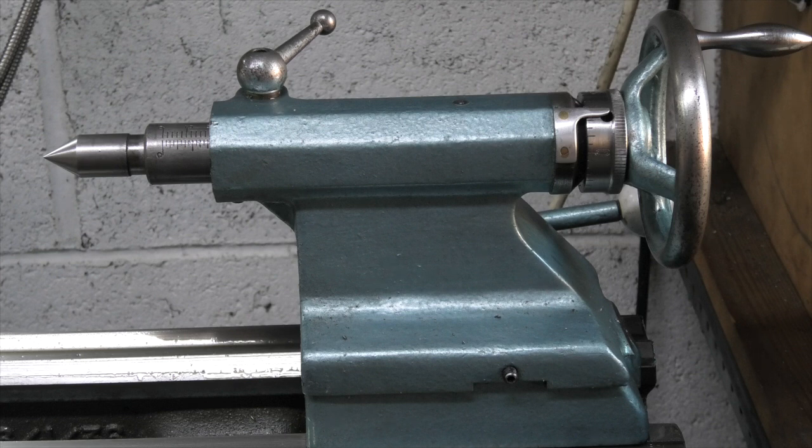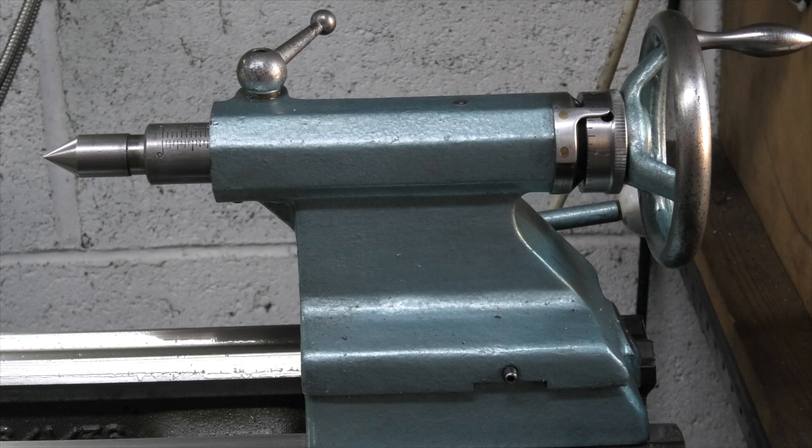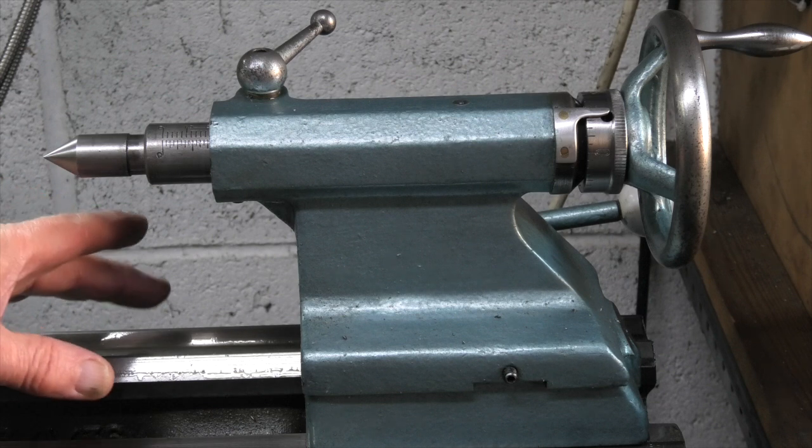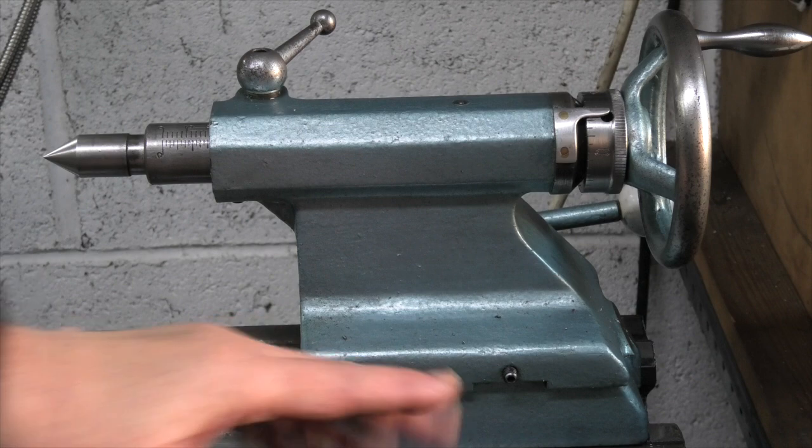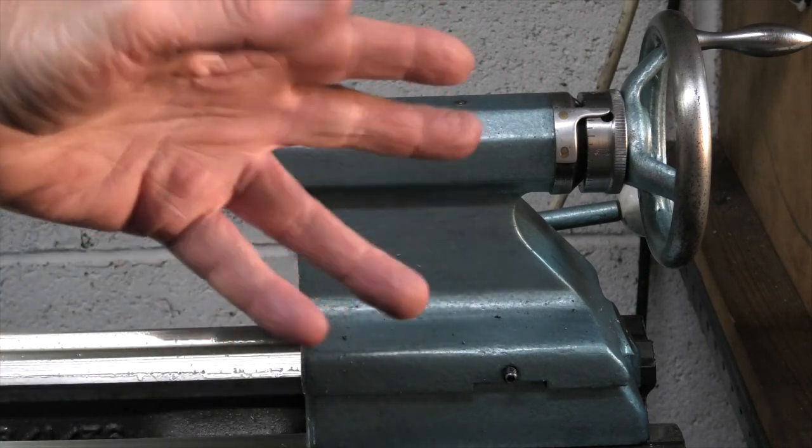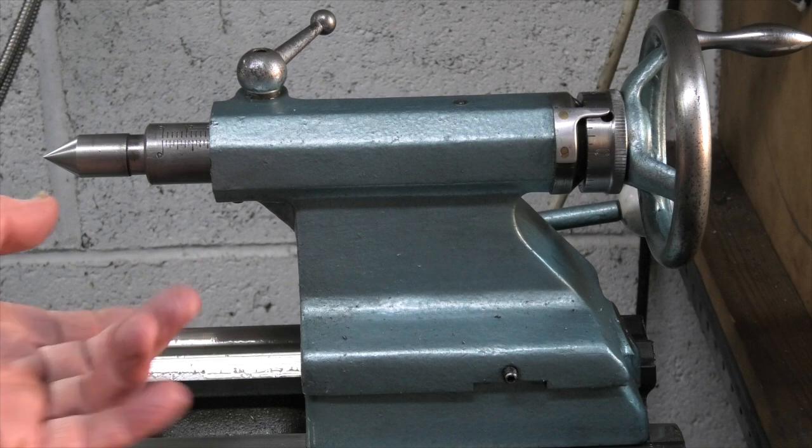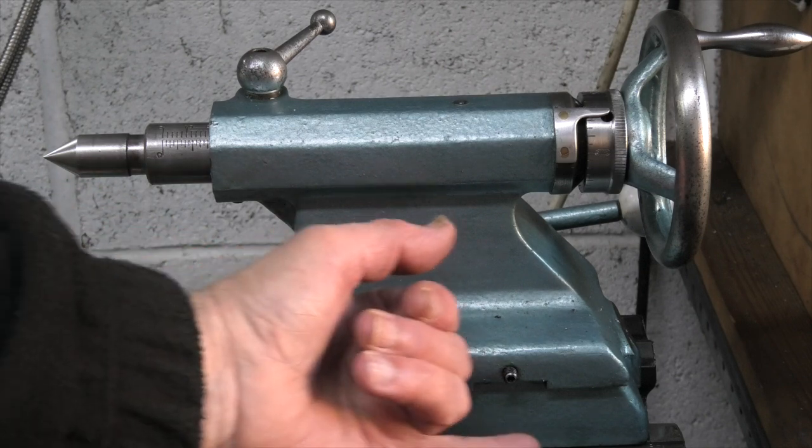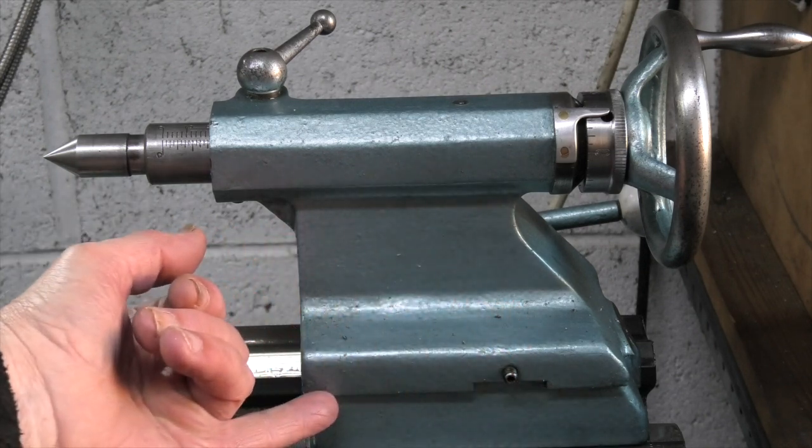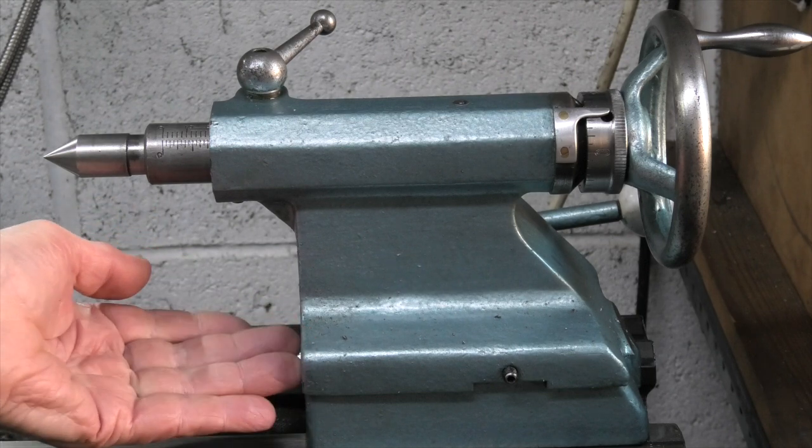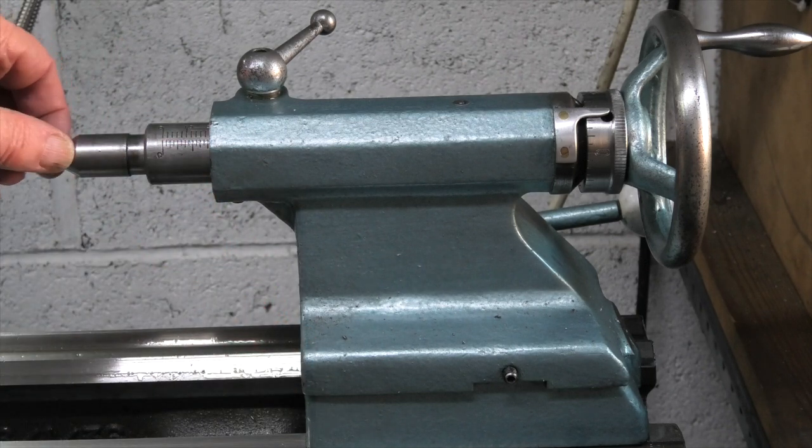I've had this lathe for 50 years. So over the 50 years, not only the bed but the tailstock as well are wearing every time you move it backwards and forwards. By putting some shim underneath this face, in between the two, it lifted it back up. It's now on line.